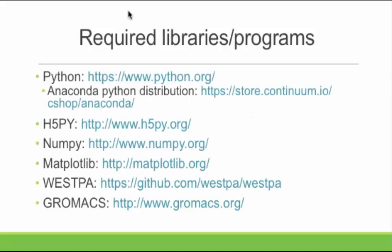Really quickly, I just want to go through the required libraries and programs. As Matt mentioned, Anaconda Python distribution is what you want. The three libraries you need are included in all of that. Of course, you need Vespa and Gromacs because this is interfaced with the tutorial that Adam has presented. It will come packaged with the data that you would get if you ran that simulation for about 70 iterations or so.